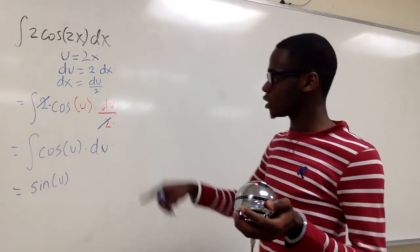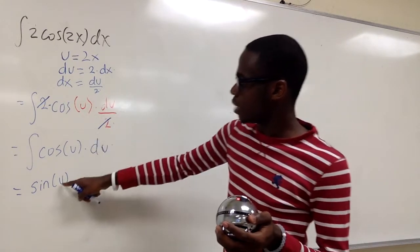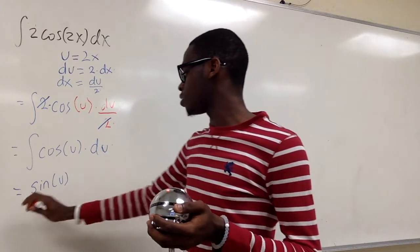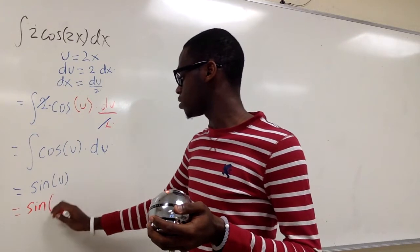And then we want to go back to the x world because we're in the u world now. And we said u was equal to 2x. So we just have sine of 2x.